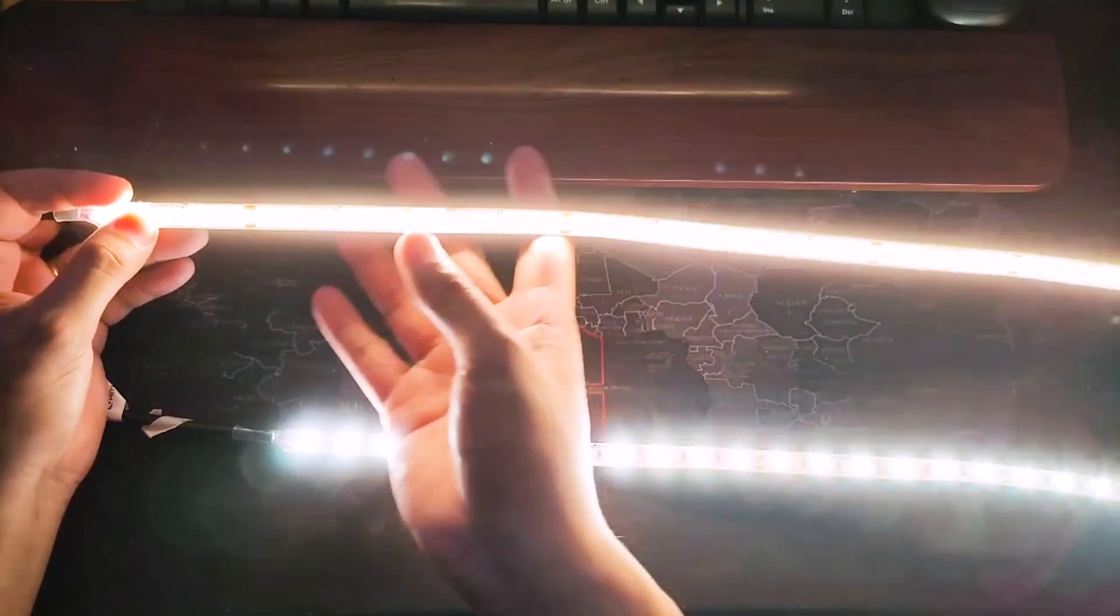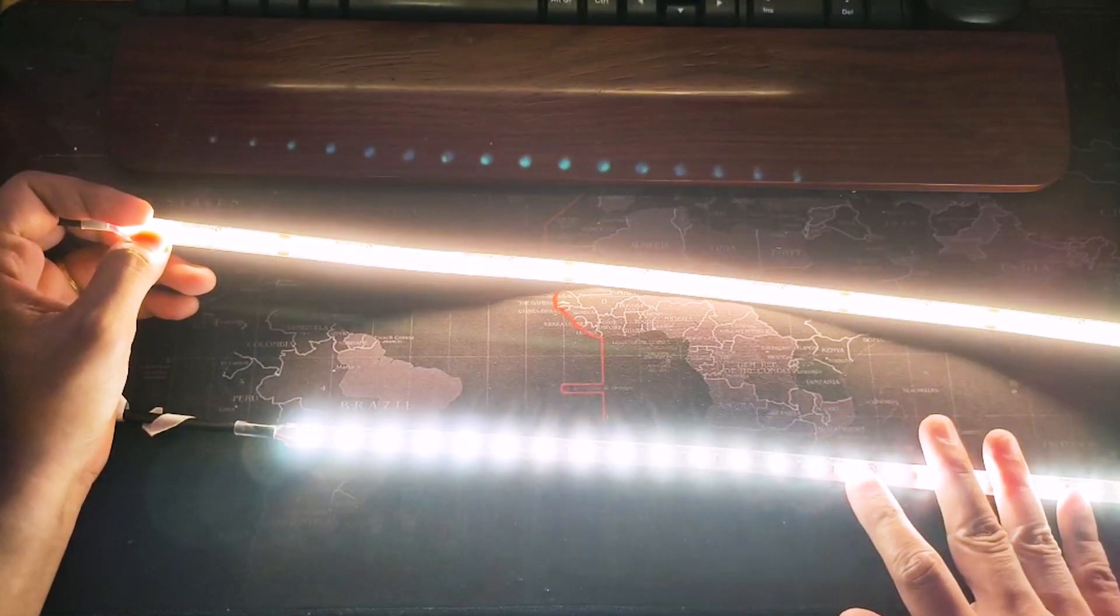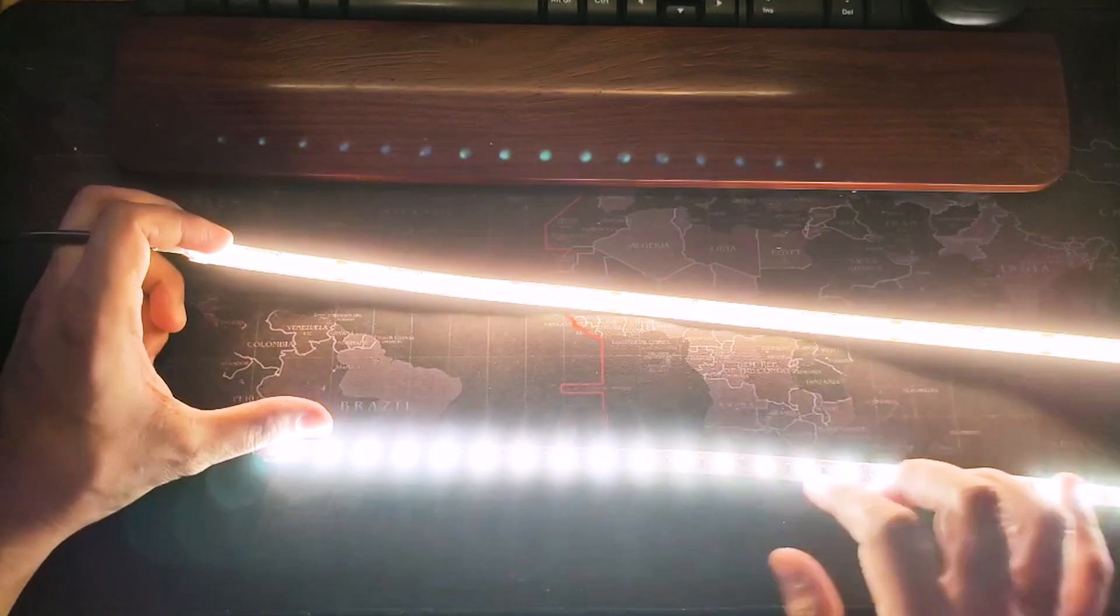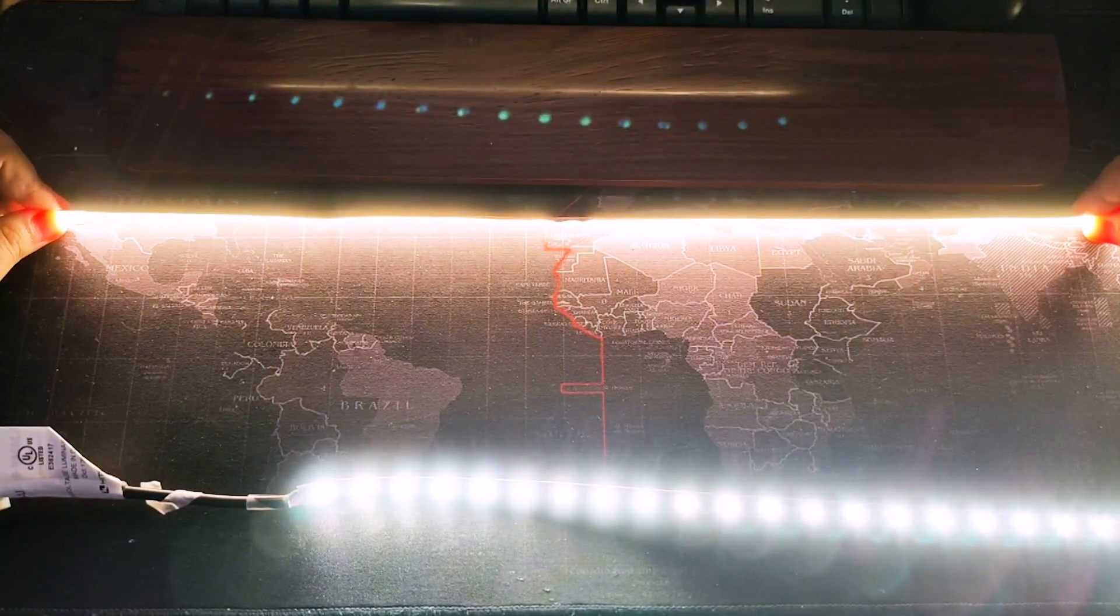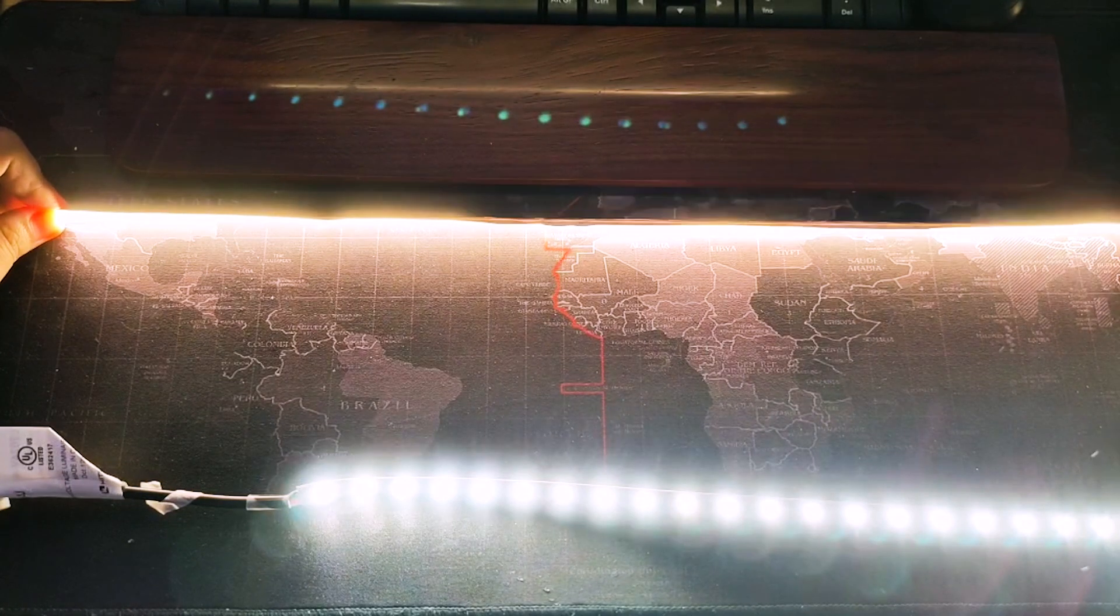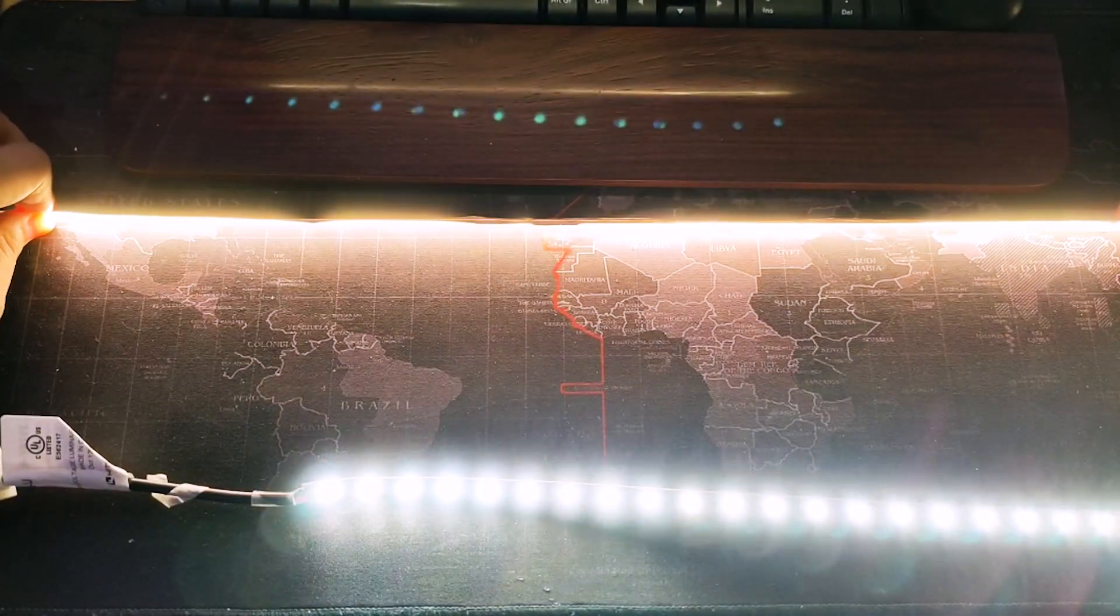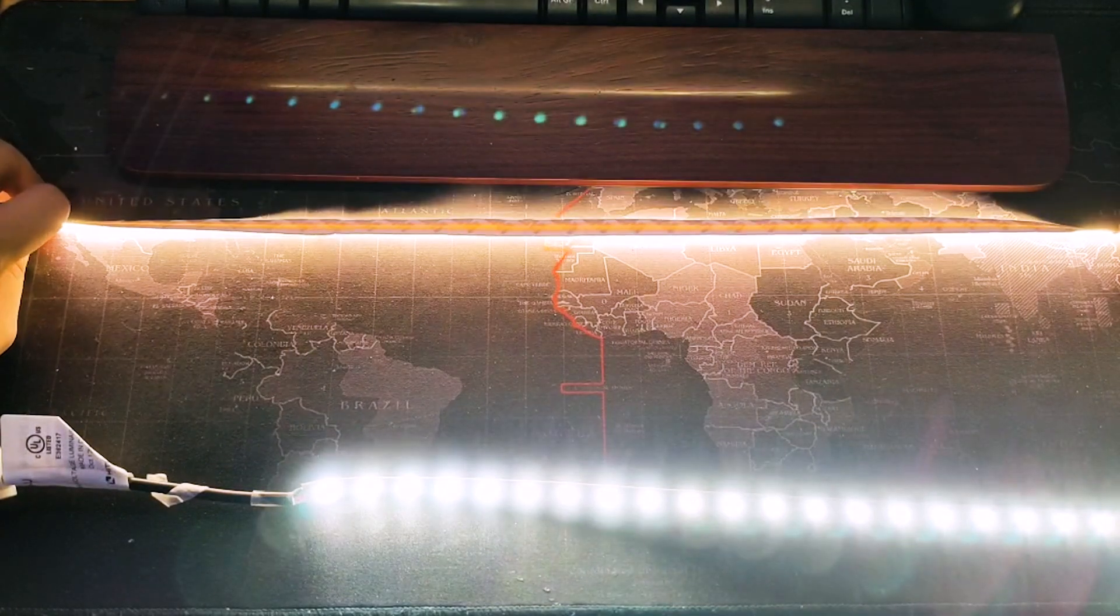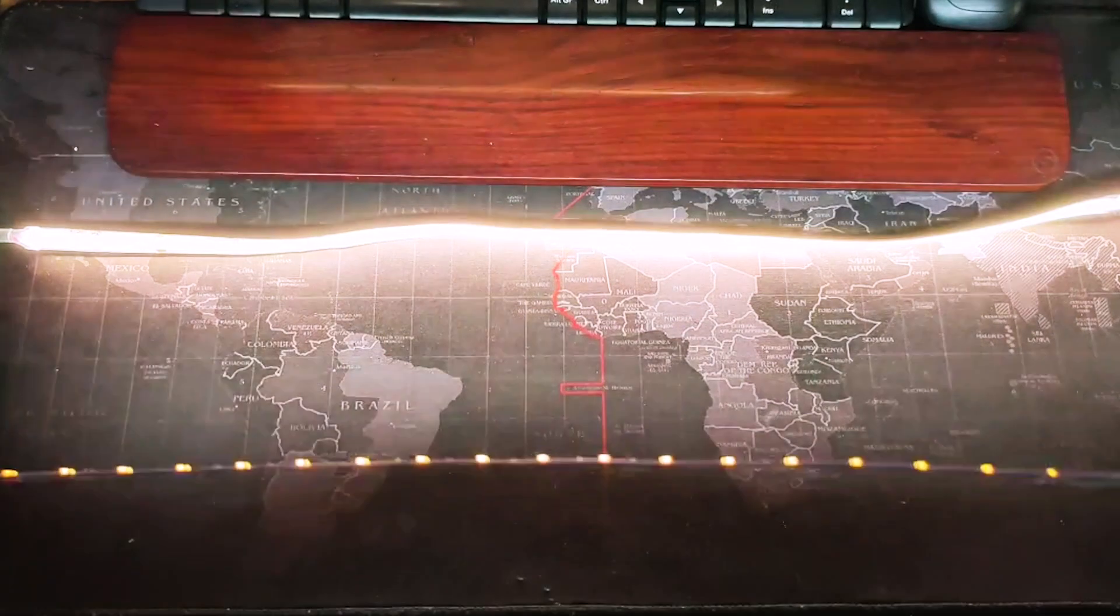So what that translates to is when we shine them on a surface at an angle or different angles, you have a more uniform light with no gaps. Versus the LEDs, you would see noticeable gaps in between. So that's how the light would be shined on.